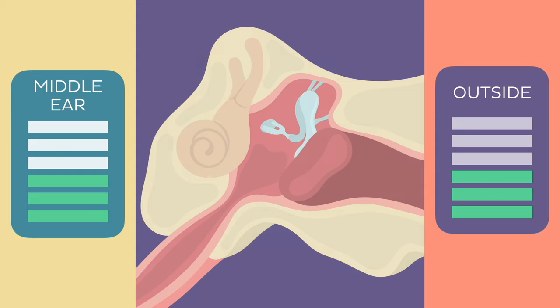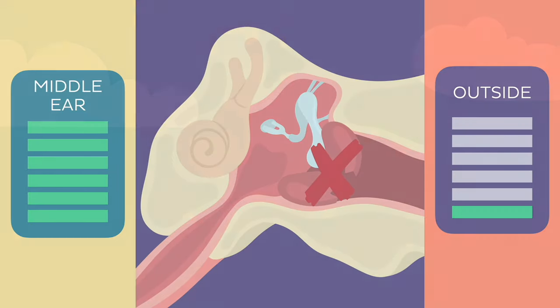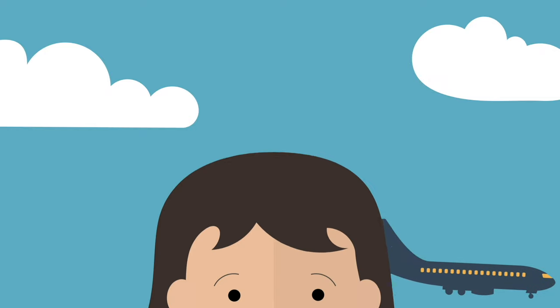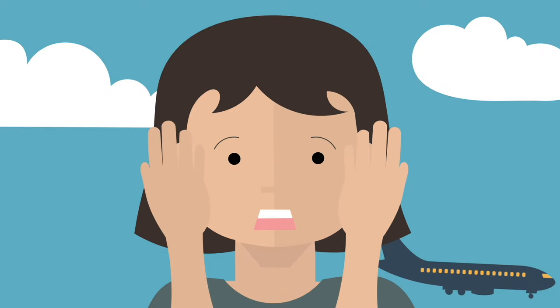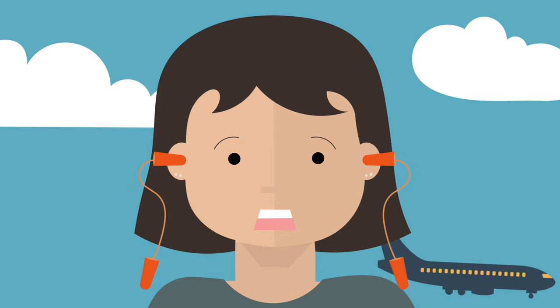This is a really important function of the Eustachian tube as it prevents the eardrum from tearing. You've probably noticed this process while ascending or descending on a plane — those odd sensations of clogged ear, change of hearing, and popping sounds are actually the product of pressure equalization in your ear.